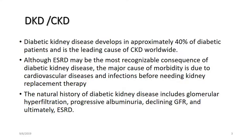Diabetic kidney disease develops in approximately 40% of diabetic patients and is the leading cause of CKD worldwide. Although end-stage renal disease is the most recognisable consequence of diabetic kidney disease, the majority of deaths are due to cardiovascular disease and infection before needing kidney replacement therapy. The natural history of diabetic kidney disease includes glomerular hyperfiltration, progressive albuminuria, declining GFR, and ultimately ESRD.